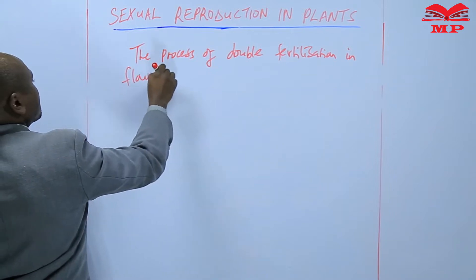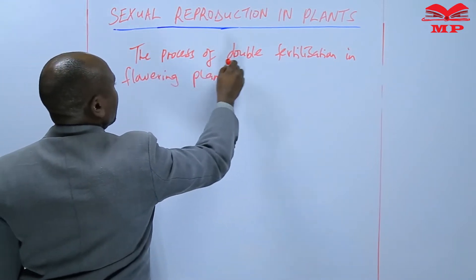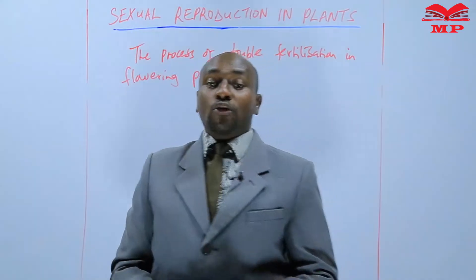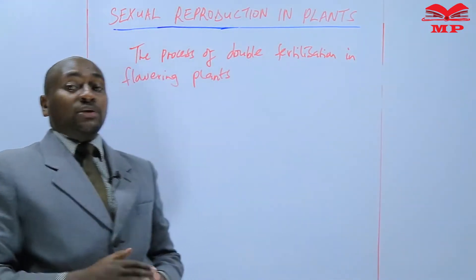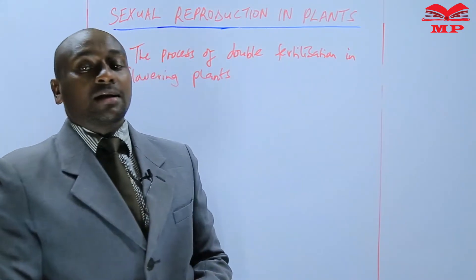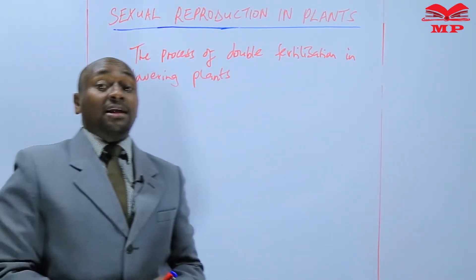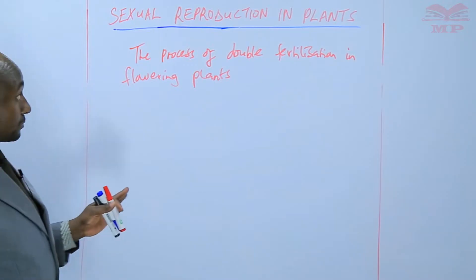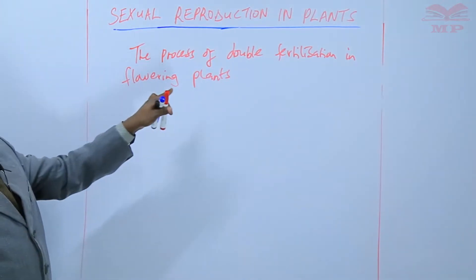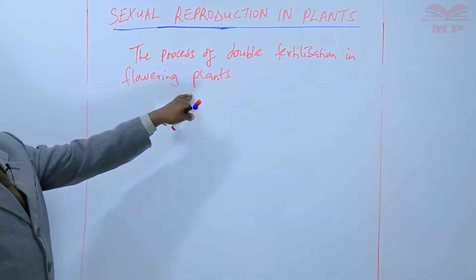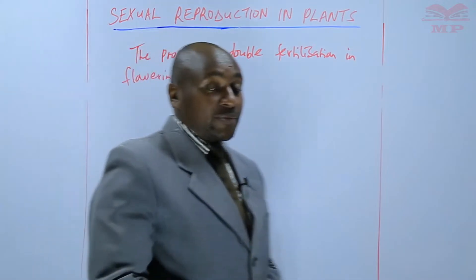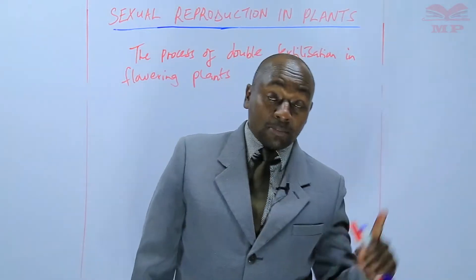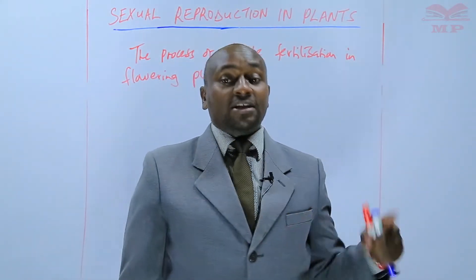In flowering plants. Last time we talked about the structure of gametes — the male gametes and the female gametes — and we said that those are the cells that are involved in fertilization. Today we are going to discuss double fertilization. But before we discuss double fertilization, it is important to understand that pollination must take place first, so that fertilization can follow.